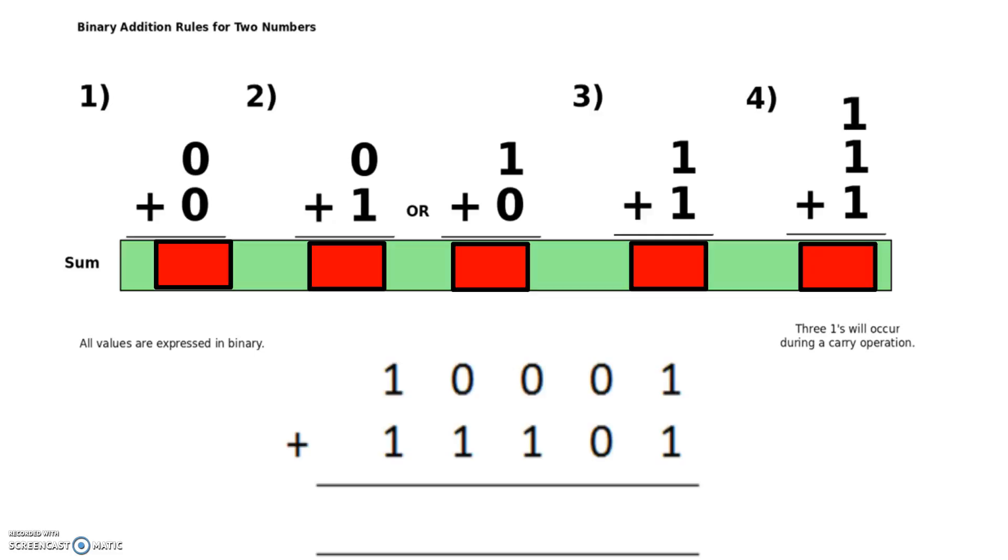So we're going to have these binary digits or bits and the first example we're going to have a look at is this one here where we're adding zero to zero.